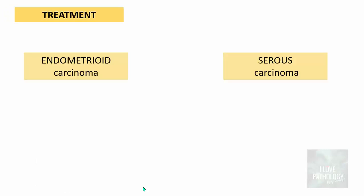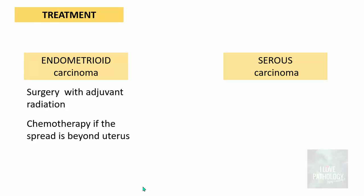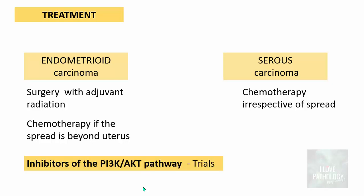Treatment depends on the type of cancer. For endometrioid type, surgery is performed with adjuvant radiation; chemotherapy is considered if the spread is beyond the uterus. For serous carcinomas, chemotherapy is given irrespective of spread — even in early stage disease. Clinical trials are currently ongoing using inhibitors of the PI3K/AKT pathway, which are helpful specifically in endometrioid type endometrial carcinomas.